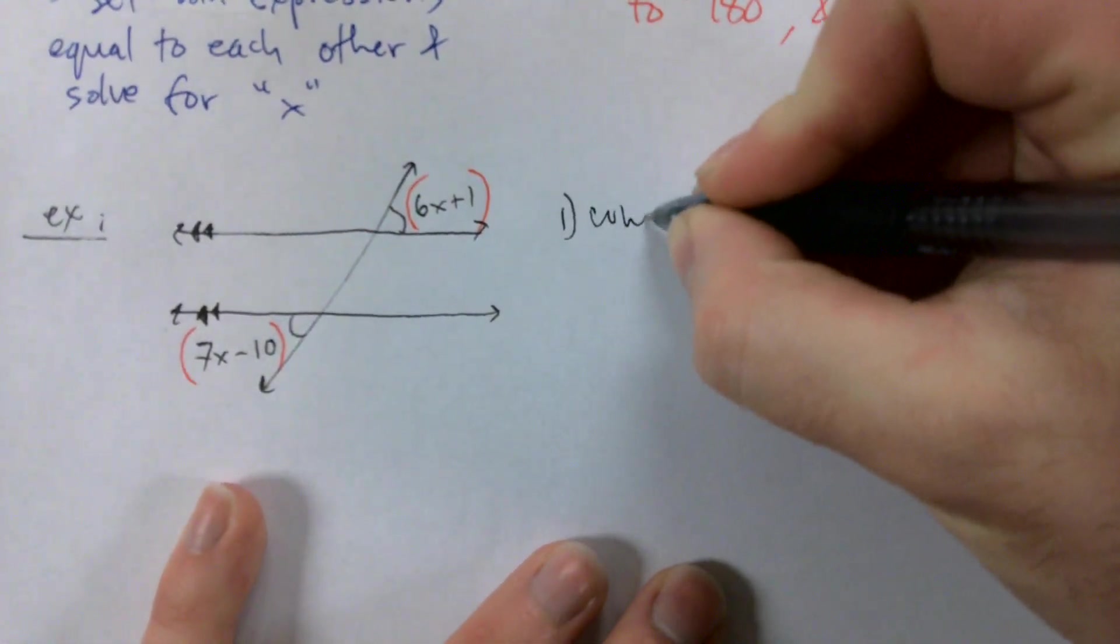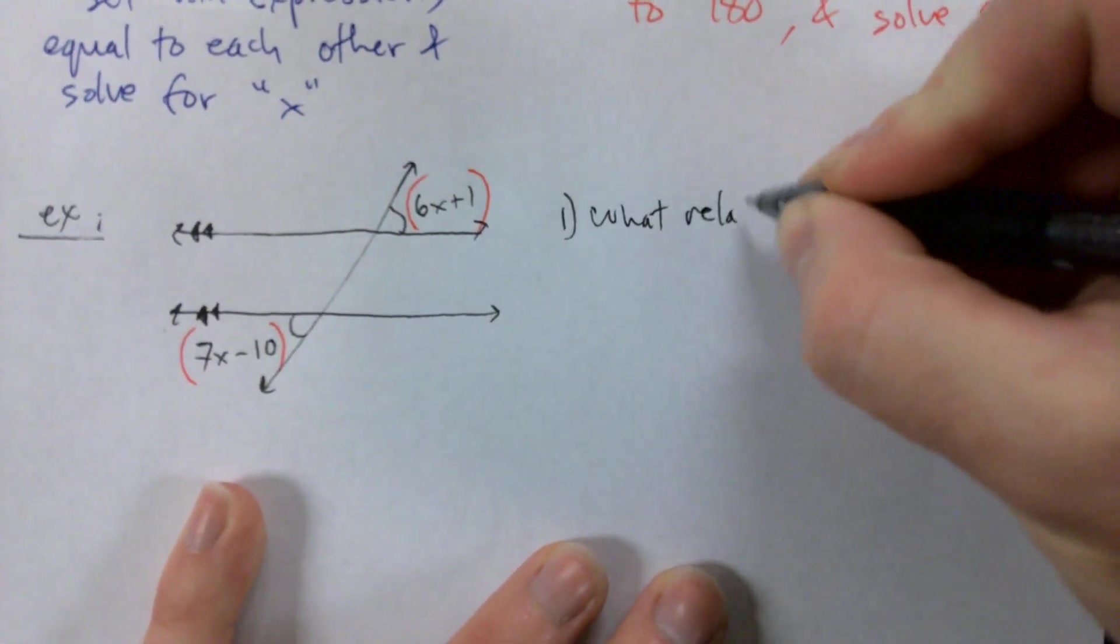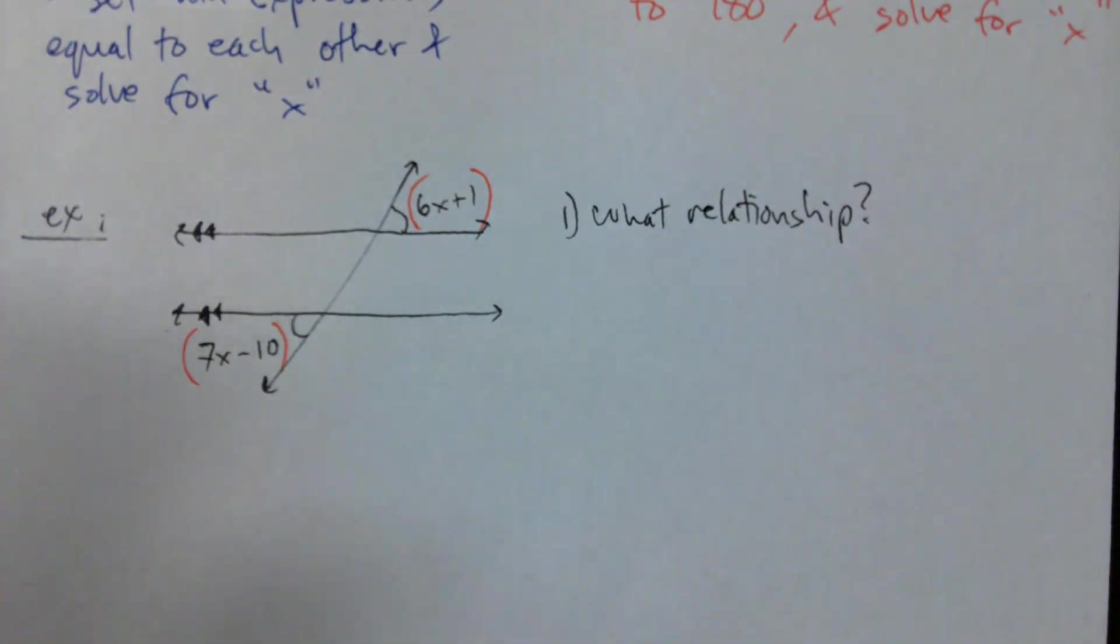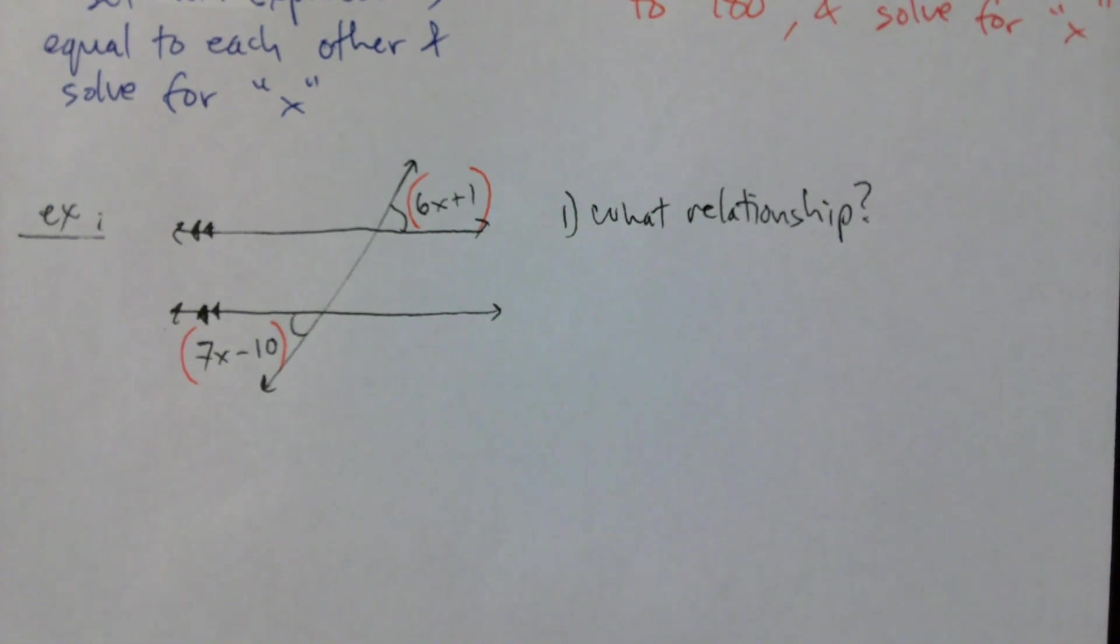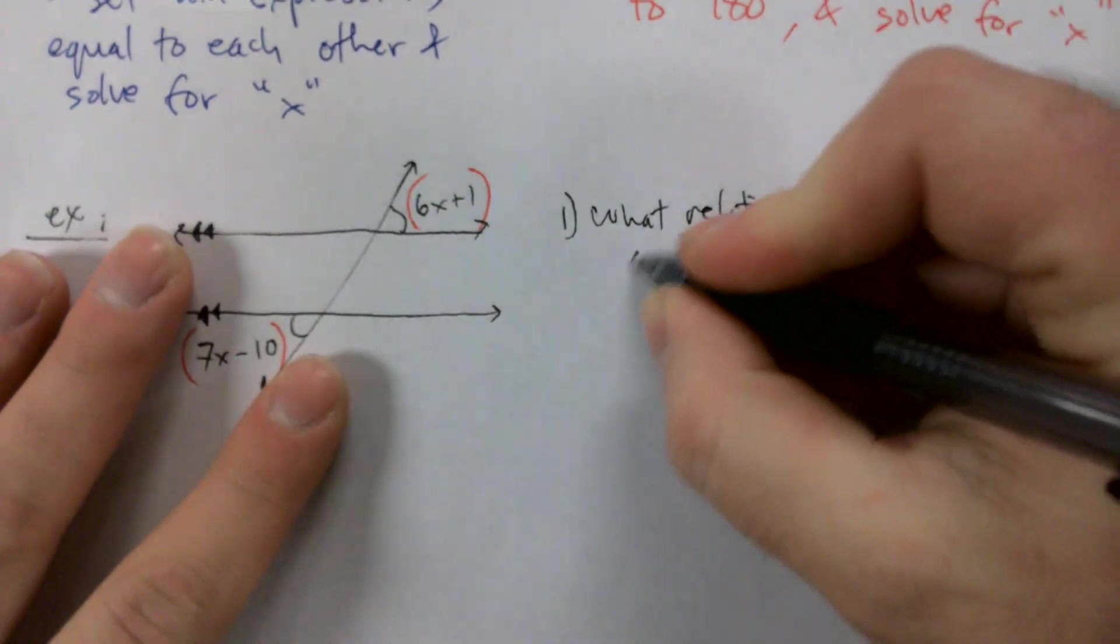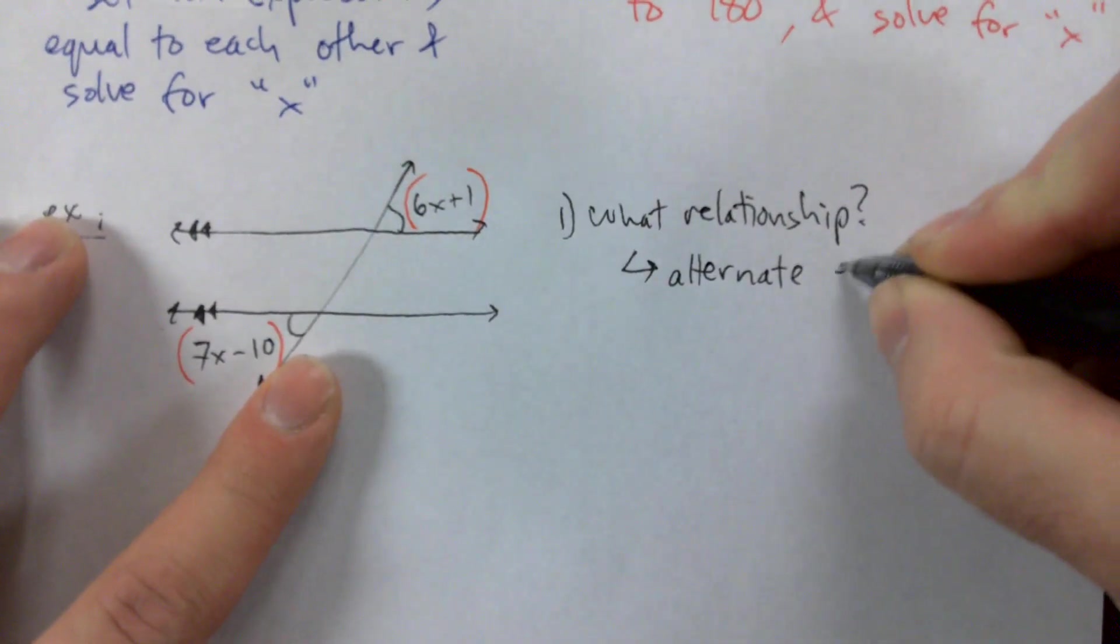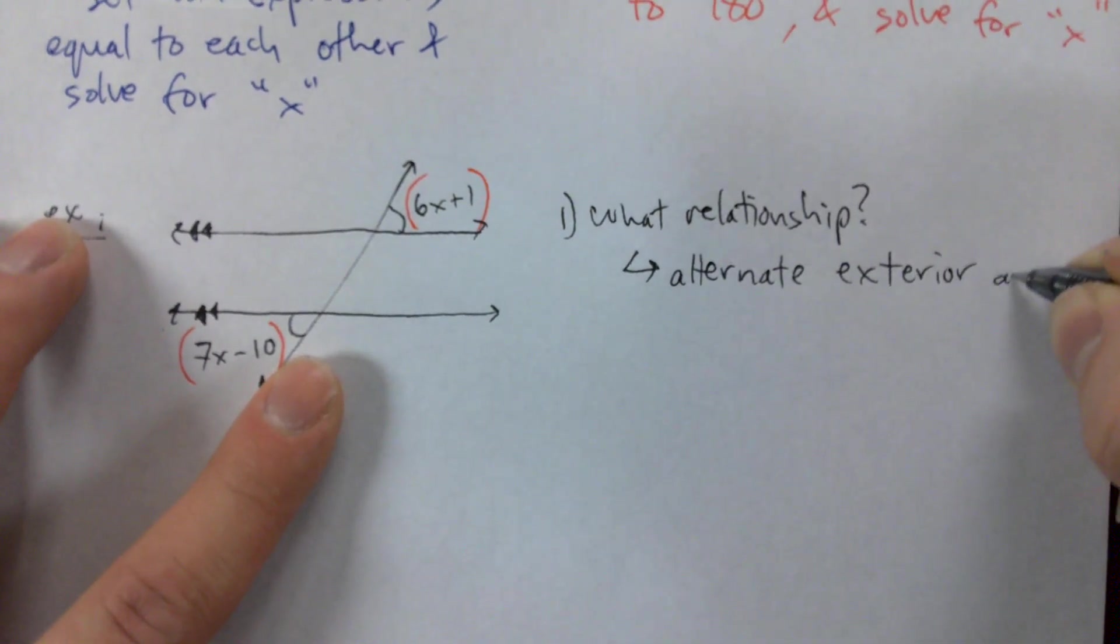So first we're going to answer, what relationship do we have? Are these alternate interior, alternate exterior, same side interior, corresponding, or vertical? Anyone want to take a guess? Mason. Alternate exterior. That's right. Alternate exterior angles.